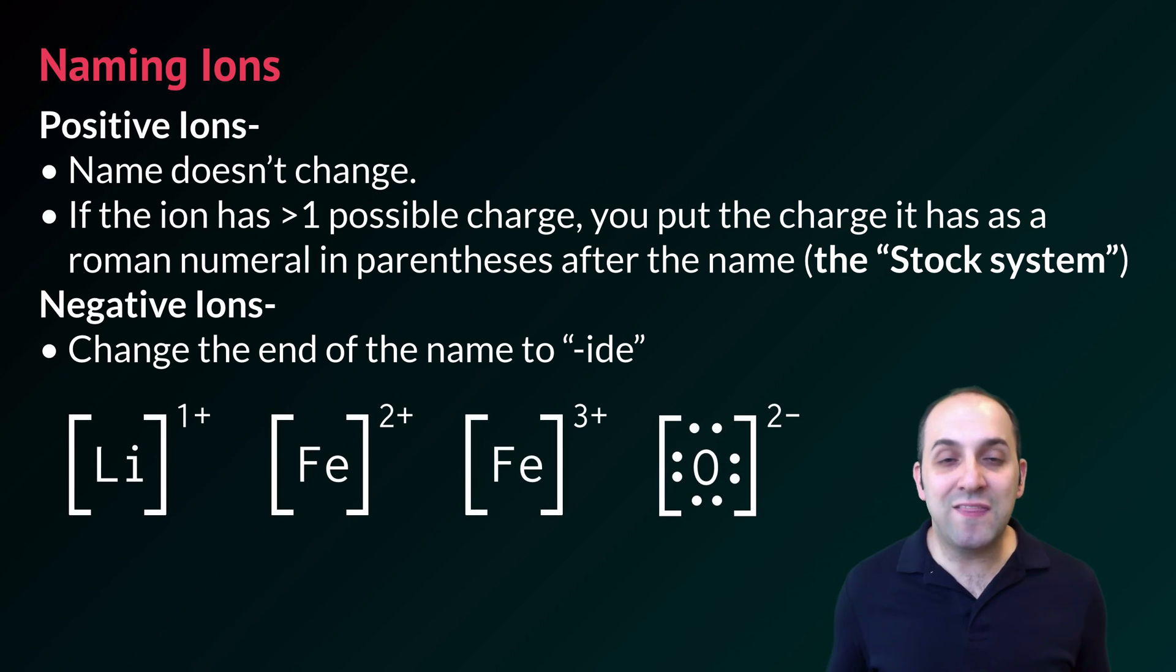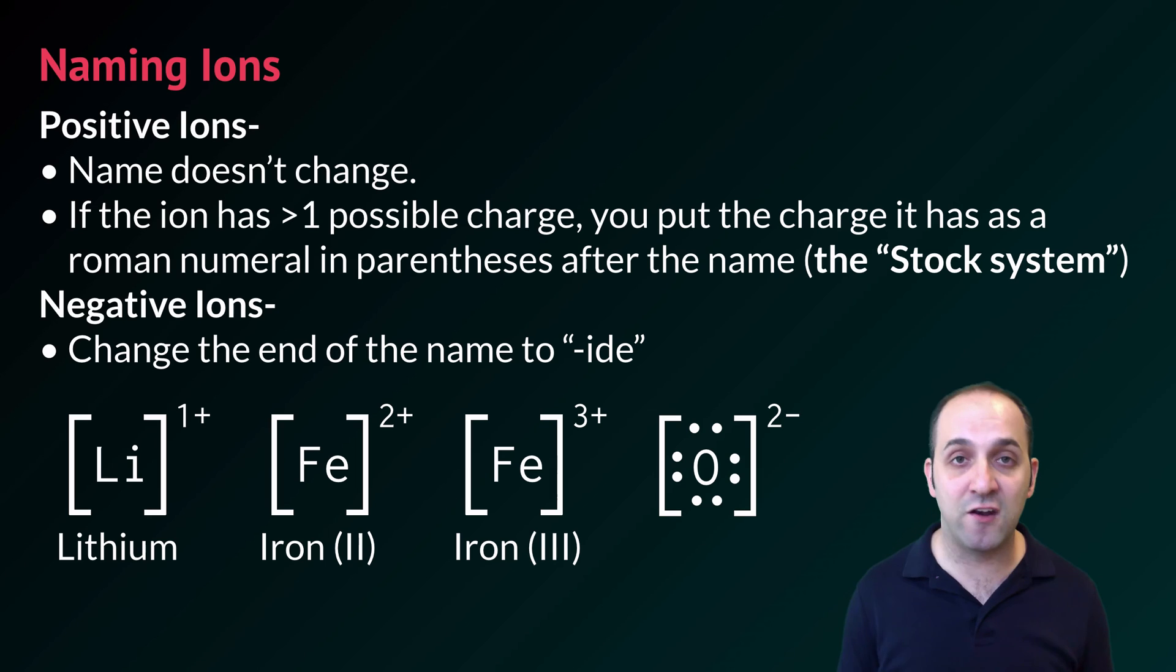Let's do some examples here. Lithium only has one possible charge, so the name of its ion is simply lithium. Iron, as you can see here, has two possible charges. So where iron has a plus two, we're going to call that iron, parentheses, Roman numeral two, to signify that it's plus two. And where it's plus three, we're going to call it iron, parentheses, Roman numeral three, to signify that it's plus three. Oxygen is a negative ion, and so as a result, we're going to change the end of its name to IDE, or oxide.